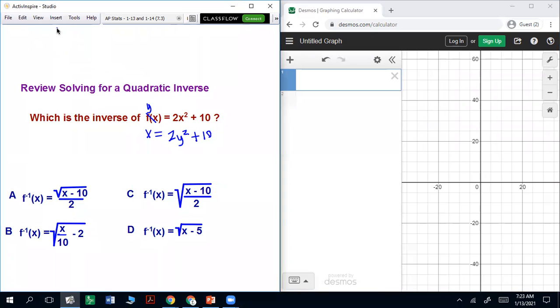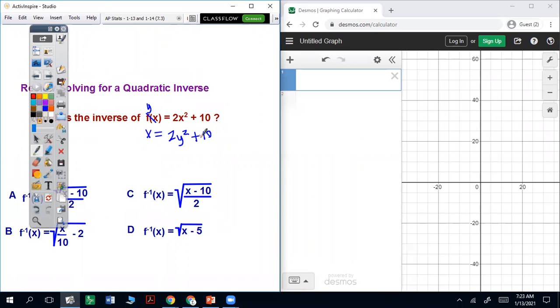Now to solve this for y, you have to get rid of the numeric terms first. So we're going to subtract the 10 to undo that. So it's going to be x minus 10 equals 2y squared.